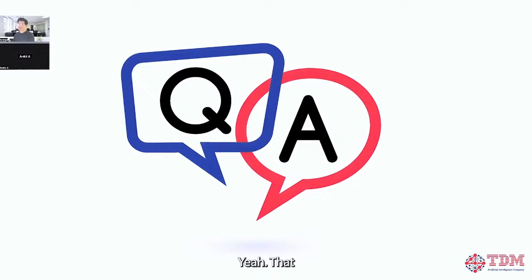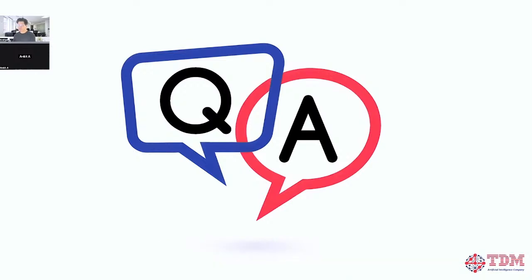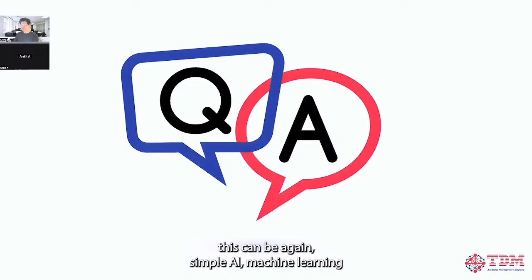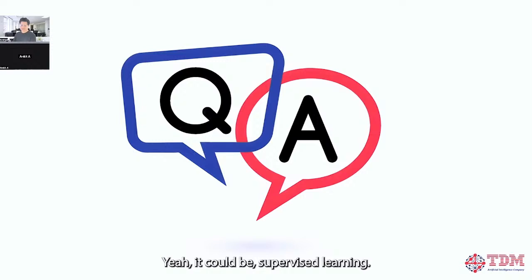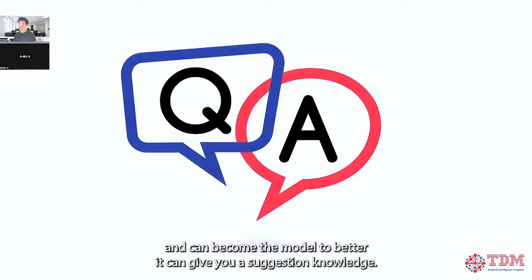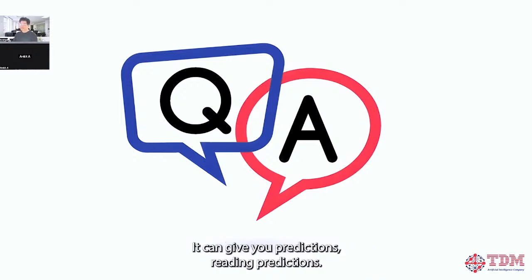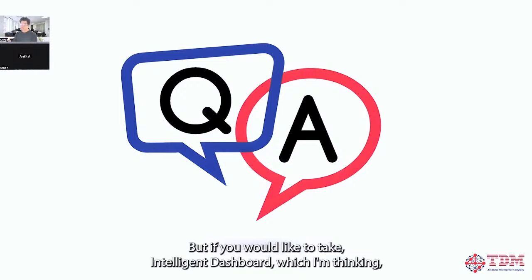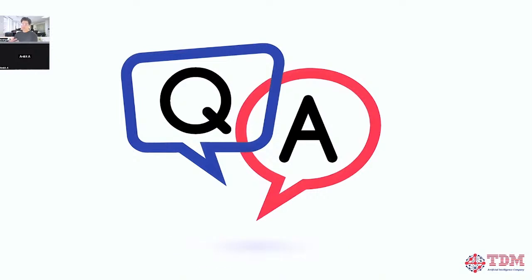The answer: this is not a large language model problem. This can be simple AI/machine learning-driven prediction and learning — supervised learning. Generative AI is for content generation, fine-tuning, and finding answers based on what you feed it. But it can be a combo model: it can give suggestions and predictions — like 'these are five steps to take if you are delayed in the project.' For an intelligent dashboard, it would fall in the predictive modeling side.